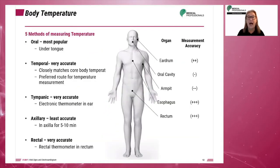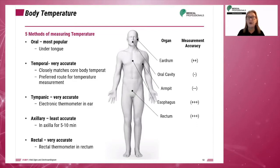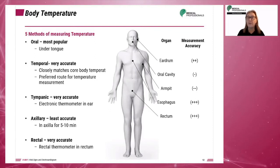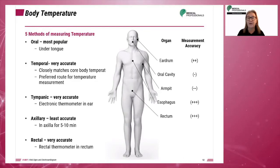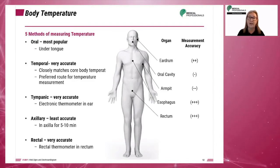There are five common methods used to measure temperature. Oral measurement is done by placing the thermometer under the tongue for 20 seconds to 3 minutes. The normal reading is 97.7 to 99.5 degrees Fahrenheit, or 36 to 37.5 degrees Celsius.